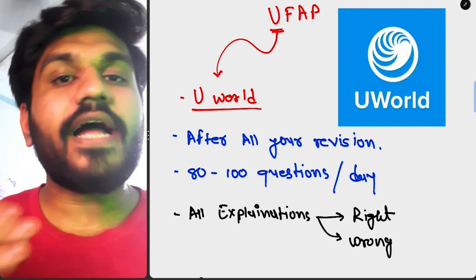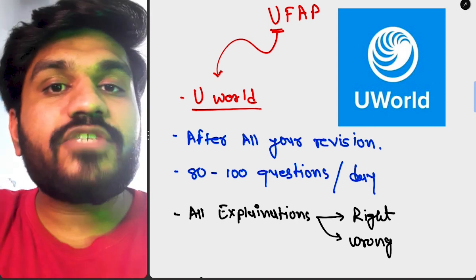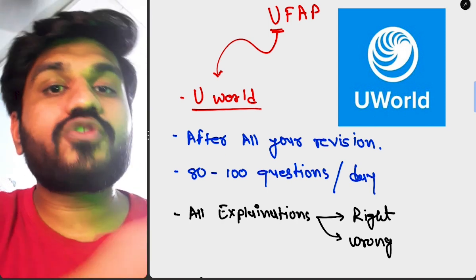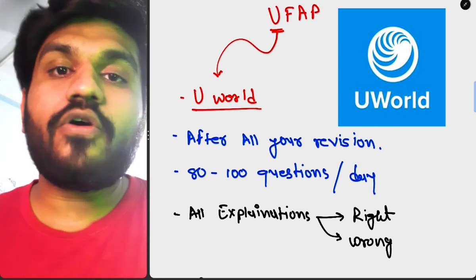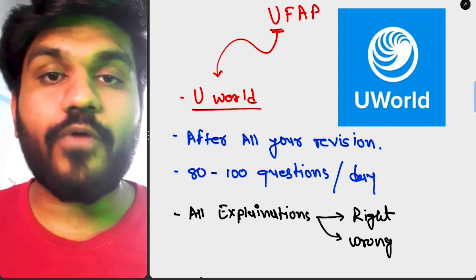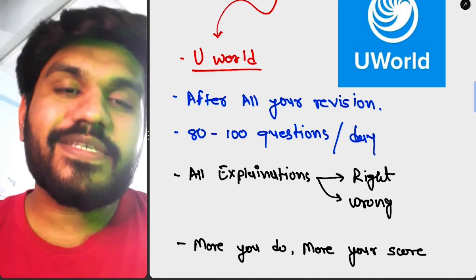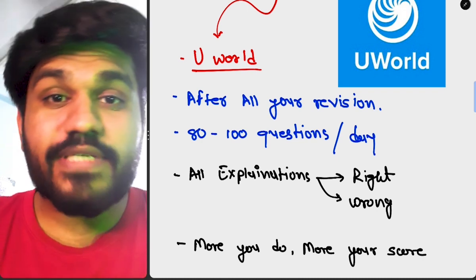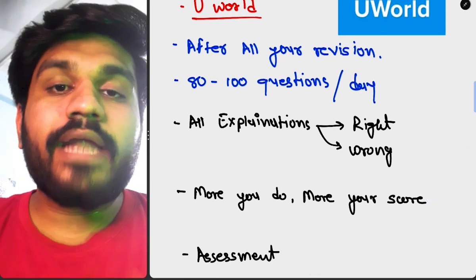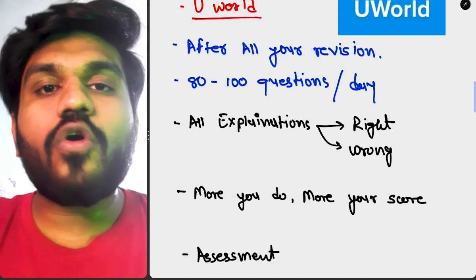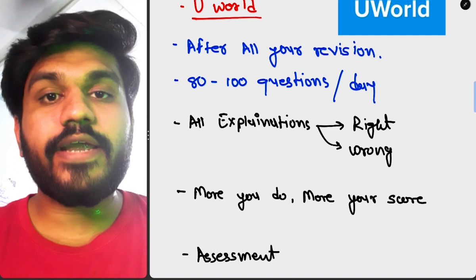Whether you get a question right or wrong, UWorld gives you information explaining how the question should be answered and why the other options aren't correct. It's a great way to remember everything when you're close to your exam. I recommend doing 80 to 100 questions a day so you can finish all of UWorld in your last 30 to 40 days. The more UWorld you do, the higher your score. It also has a self-assessment feature so you can see where you stand when you're close to exam day.